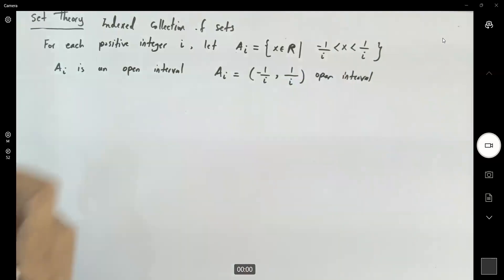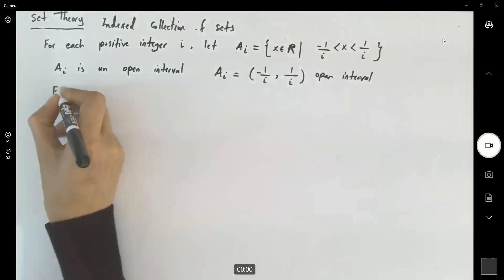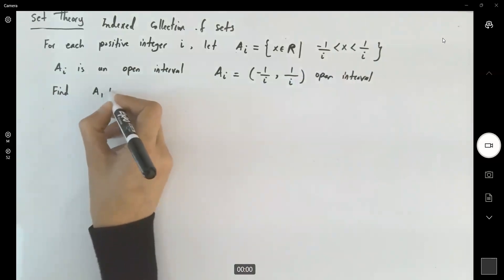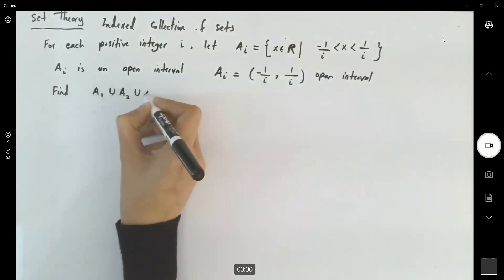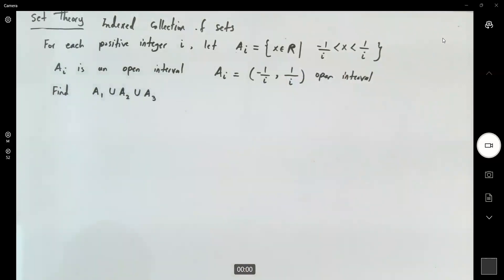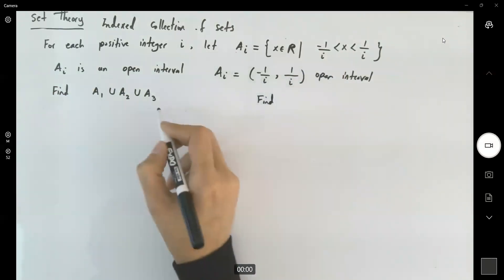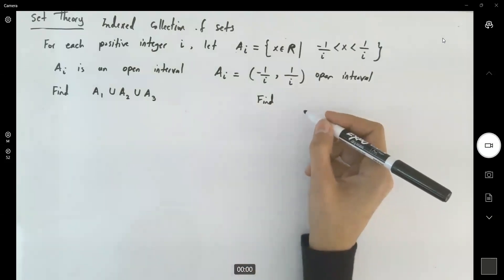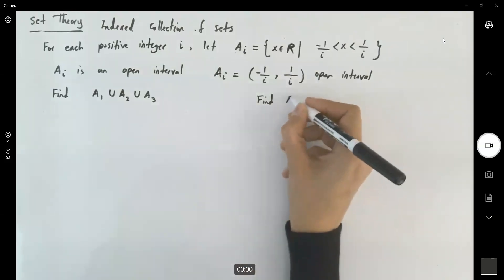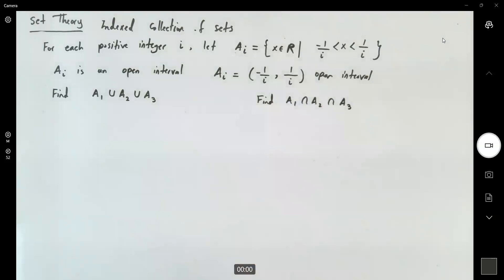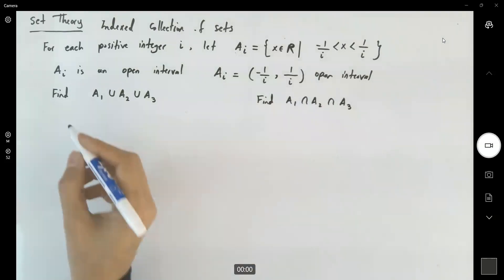I want you to find the union between A sub 1, A sub 2, and A sub 3. Also, I want you to find the intersection between these three sets: A sub 1 intersection A sub 2 intersection A sub 3. We're going to build each one of these step by step using the definition.